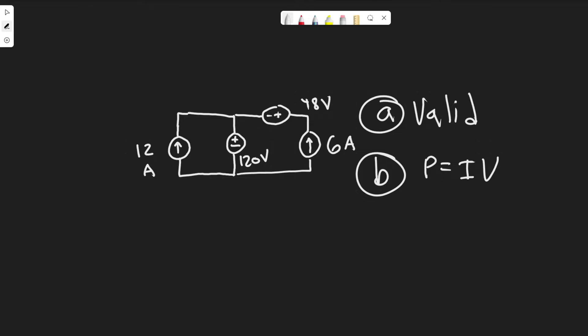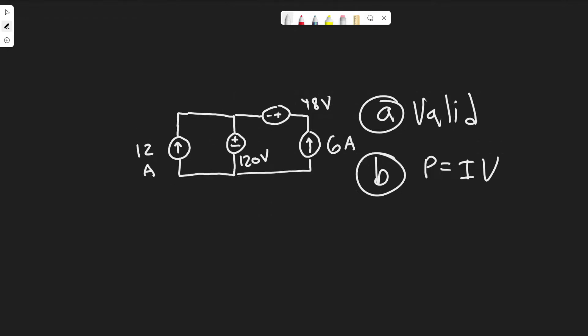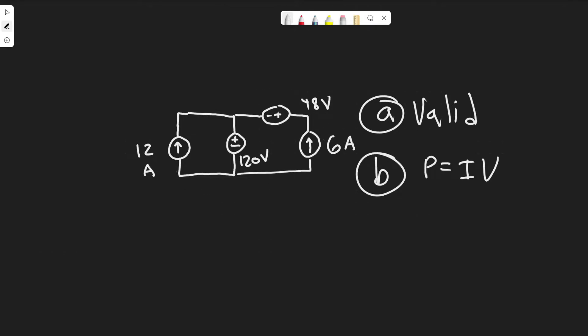We're trying to find the power developed by the current sources. These current sources are going to be developing the power, and then the voltage sources are going to be dissipating it. We know they're going to be equal, so we can find either the power dissipated or the power developed because they're going to be the same value — one just would be negative because it's losing. I think the easier way is to find the power dissipated instead.